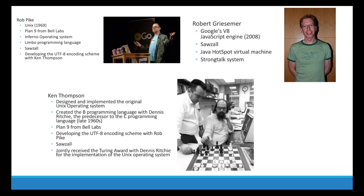Robert Griesemer worked on the Google V8 JavaScript engine used in the Chrome browser and Node.js, Sawzall, the Java HotSpot virtual machine, and the StrongTalk system. Ken Thompson designed and implemented the original Unix operating system, created the B programming language with Dennis Ritchie — a predecessor to C, which was itself a predecessor to C++. He also worked on Plan 9, the UTF encoding scheme, Sawzall, and jointly received the Turing Award with Dennis Ritchie for the implementation of Unix.